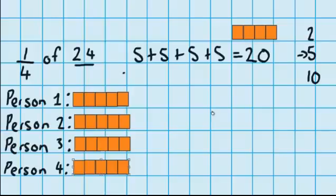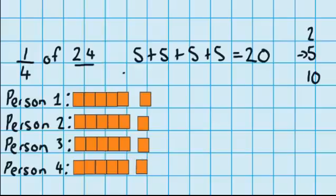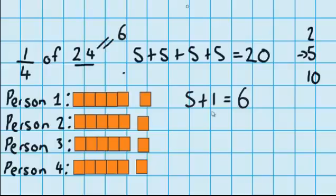That's going to be very easy — I've got 4 blocks and I need to share them between 4 people, so I'm going to give 1 block to each person. Person 1 gets 1 more, person 2 gets 1 more, person 3 gets 1 more, and person 4 gets 1 more. So at the start we gave everyone 5 blocks and then 1 more, so everyone has got 6 blocks. So 1 quarter of 24 is 6.